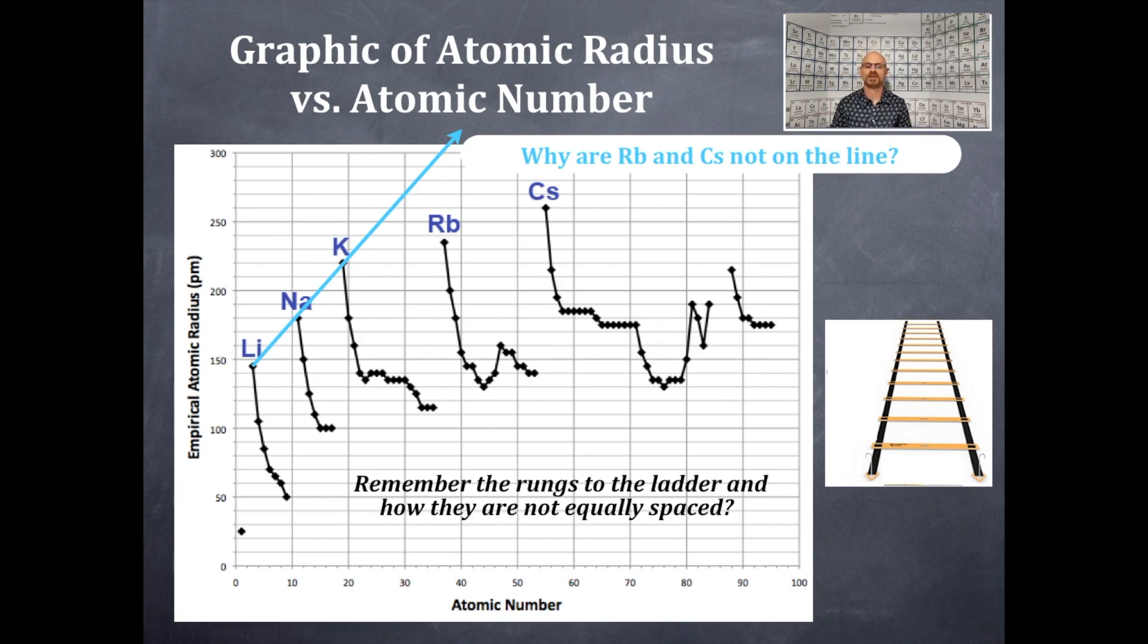Those are where you place your hands. So the rungs of the ladder are not equally spaced. And this explains why rubidium and cesium are not on this line.